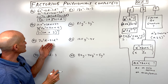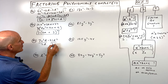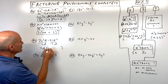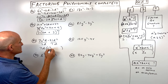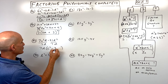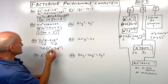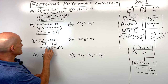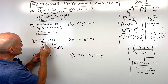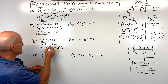Number forty-three: we can factor out a 7d from both terms. That gives 7d times c cubed minus 3d cubed. We can't factor c cubed minus 3d cubed any further, so that's as far as we can go.